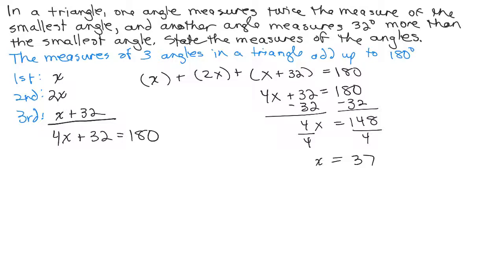So if X is 37, remember that was the smallest angle, and then we have the second angle and the third angle. Our second angle is 2X. So 2X would be 2 times 37, which is 74.